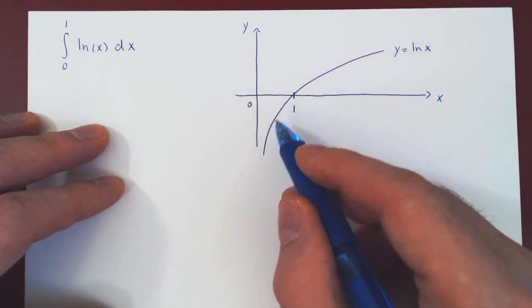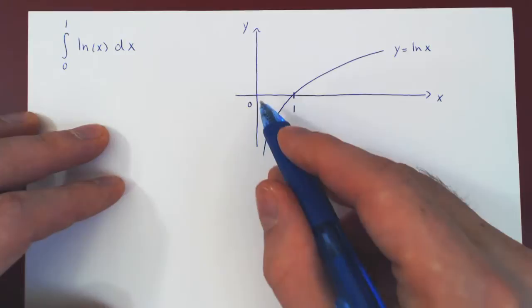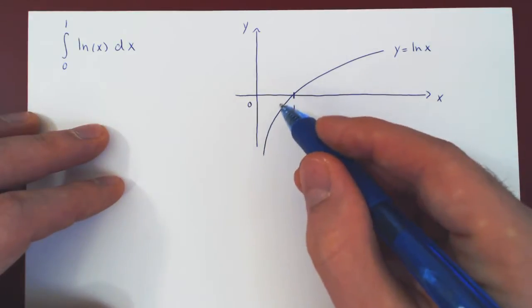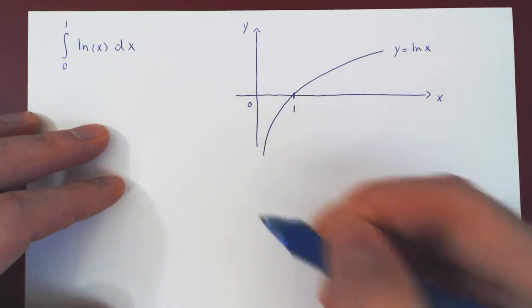ln of x is continuous, there is no break in the function everywhere between 0 and 1 except at 0 where 1 it is undefined and 2, x equals 0 being a vertical asymptote.